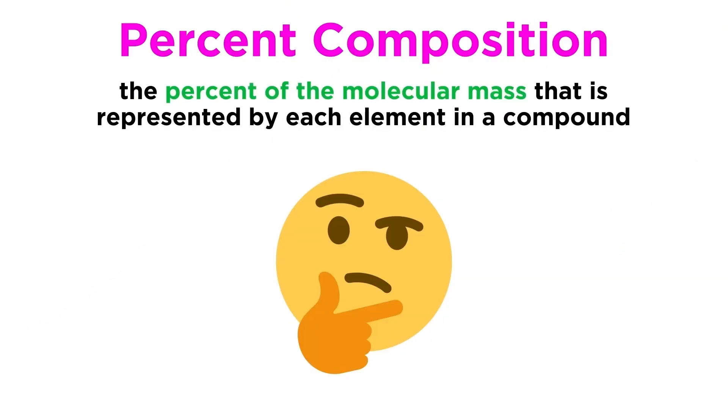As we just mentioned, the percent composition of a compound refers to the percent of the molecular mass that is represented by each element in a compound. This is a rather straightforward calculation, so let's go through a few examples and make sure everything is extremely clear.